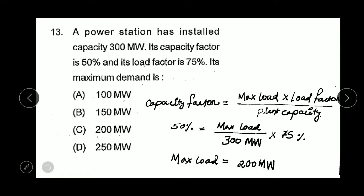Question number 13: A power station has installed capacity 300 megawatt. Its capacity factor is 50% and load factor is 75%. Its maximum demand is how much? We know that capacity factor is maximum load times load factor by plant capacity. We have to find the maximum load. Maximum load is coming to be 200 megawatt. Option C is correct.